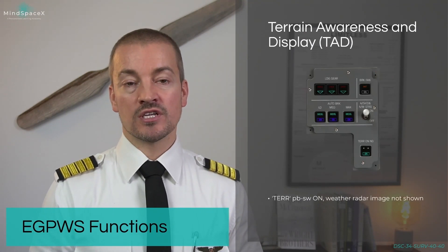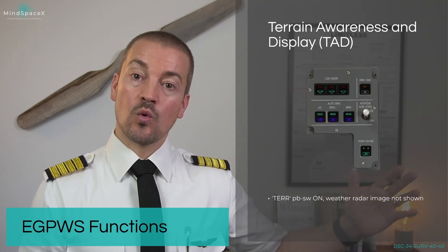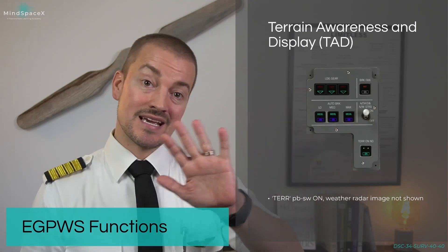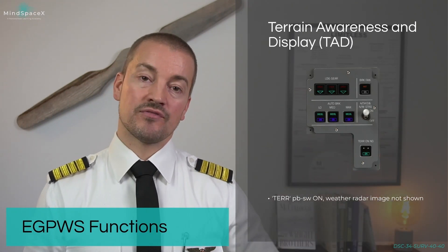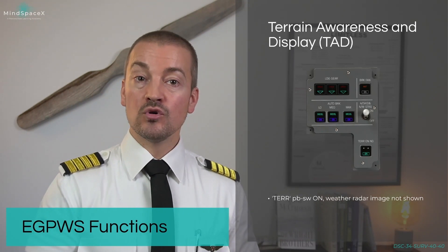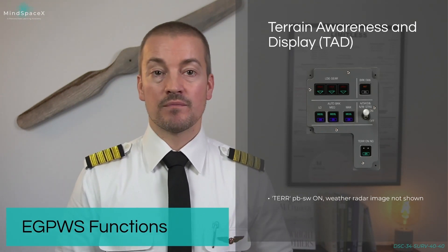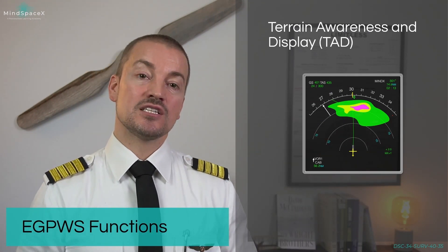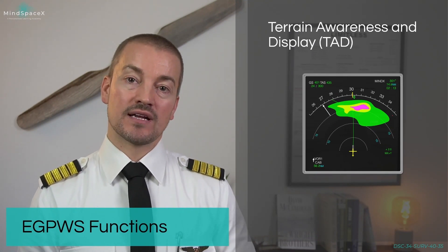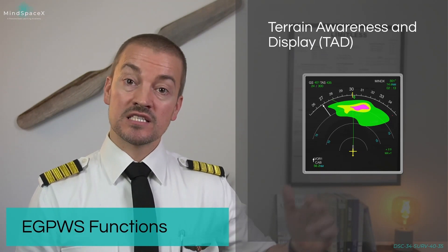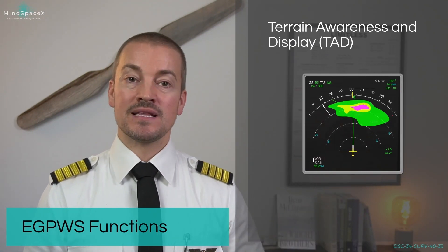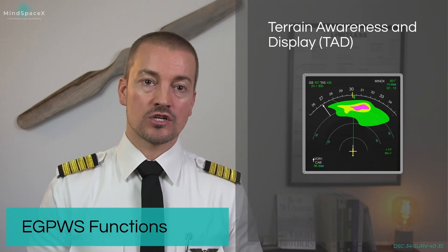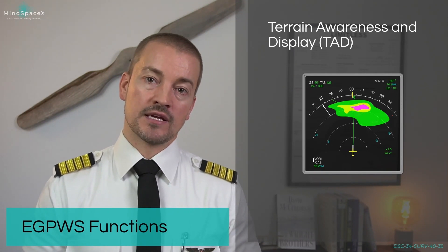The Terrain Awareness and Display function can display the terrain on the ND when using the push button — this one is for the first officer, and there is a dedicated one on the center instrument panel to the left for the captain. The terrain on the ND will remove the weather radar image and put the terrain picture up instead. This is not an indication of weather; instead, this is terrain ahead rising above our current altitude. Here you can see green, yellow, and then magenta being the highest area depicted, showing us where to be cautious when flying towards upcoming terrain.